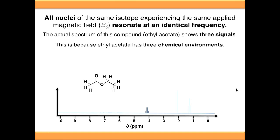Ethyl acetate has three chemical environments: these protons shown in green, these protons shown in red, and these protons shown in blue. These three chemical environments give rise to three signals.